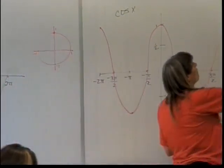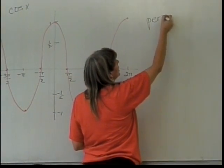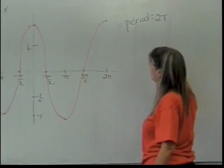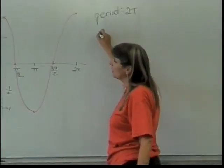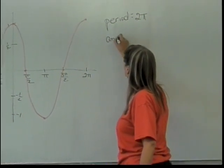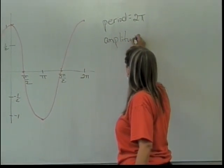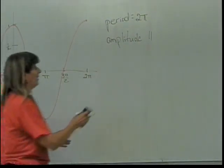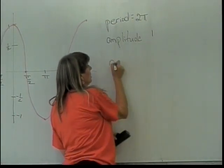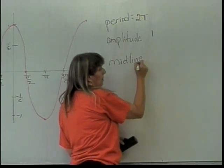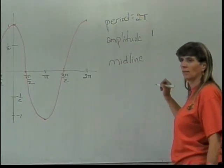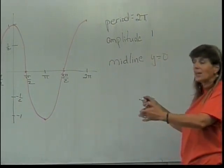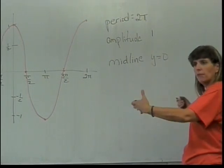Since the graph shape is exactly the same, what's going to be the period of my cosine graph? 2 pi — it still takes 2 pi to go all the way through everything. What is going to be the amplitude of my cosine graph? And the midline? Y equals 0 — remember, it's a line. And as a basic cosine graph, this doesn't have a phase shift.